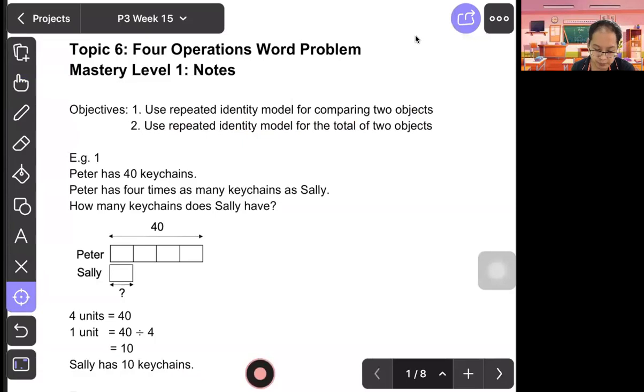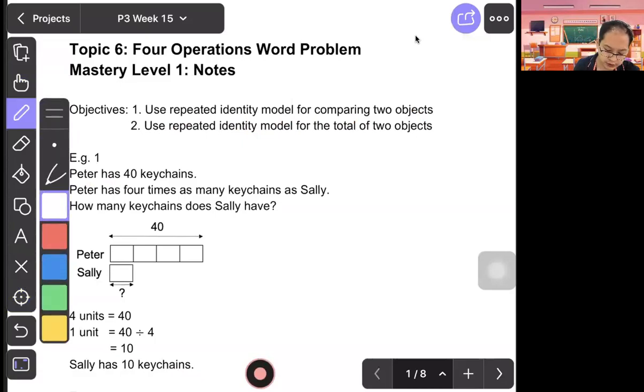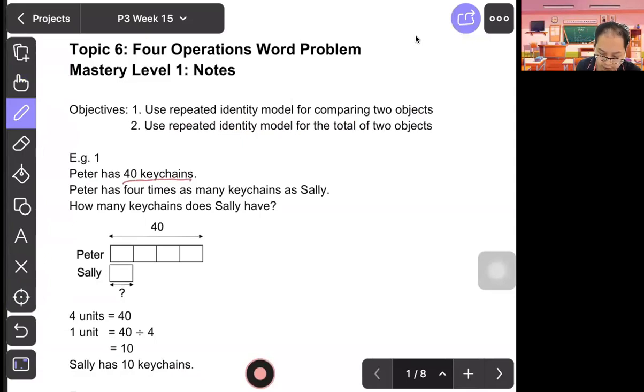Let's look at the example. Peter has 40 keychains. Peter has four times as many keychains as Sally. How many keychains does Sally have? Four times means four units. Can you see there are four units, four boxes for Peter and one box for Sally. So four units equals 40. To find one unit, you take 40 divided by 4 and one box equals 10. So Sally has 10 keychains.